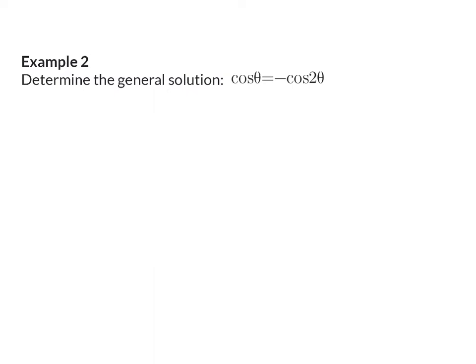Example 2: Determine the general solution of cos θ equal to minus cos(2θ). Here the trig function on the left and right is the same, so 2θ can immediately form our reference angle. Different from the previous example, here cos is negative, so when we break into quadrants, we work in the second and third quadrant where cos is negative.